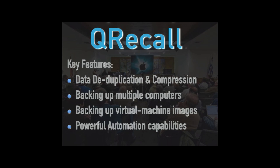This is different from, say, Time Machine, where you might have a separate Time Machine backup of your desktop and your laptop. With QRecall you can consolidate them all — it's smart enough to know that you have this document on your laptop and on your main computer, so it's only going to back it up once. Furthermore, it's only going to back up the pieces so that if they're different, it will recreate all of them but actually only store the differences between the two.